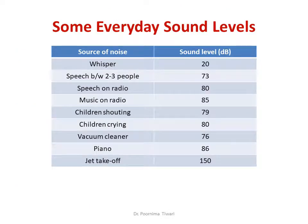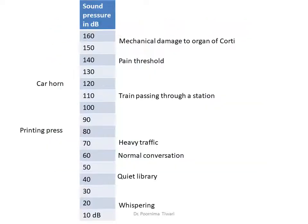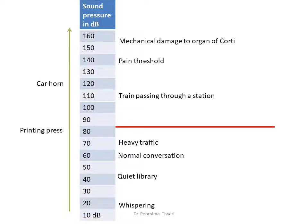This slide shows some decibel levels of everyday sounds. When you whisper, you produce around 20 decibels. When a jet takes off, it produces as much as 150 decibels. Another slide shows sounds produced in decibels by different activities in ascending order. The red line shows the acceptable maximum exposure, which is 85 decibels, after which health effects start to appear.